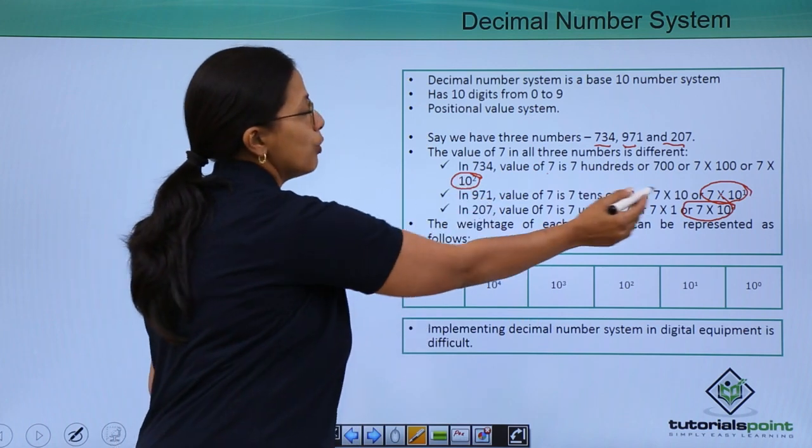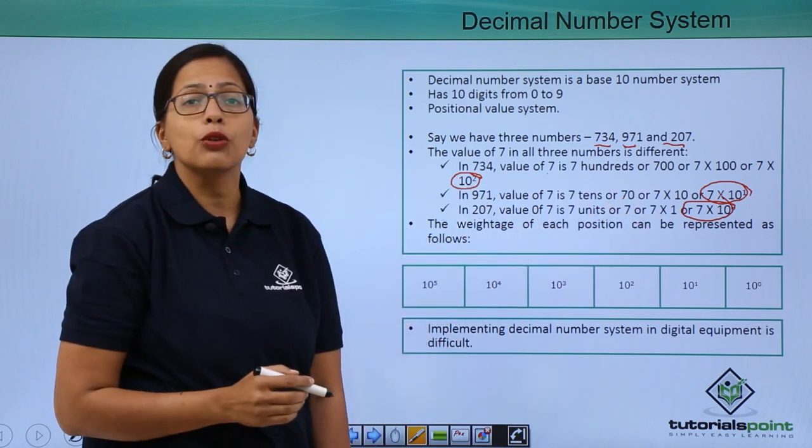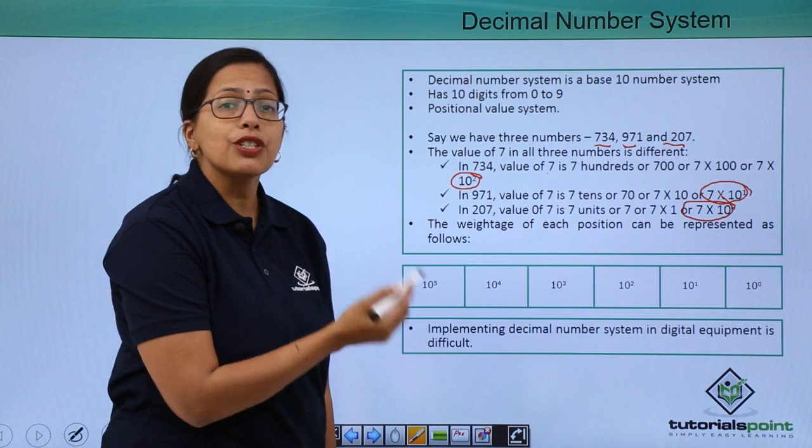So here it is 2, here it is 1 and here it is 0. Why? Because it is a positional value system.